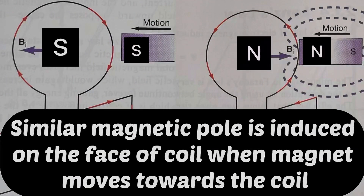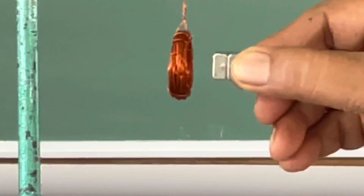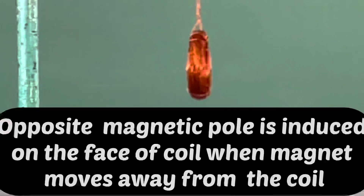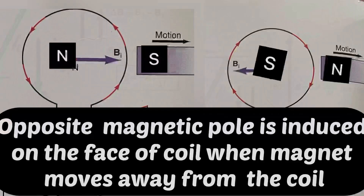A similar magnetic pole is induced on the face of the coil when the magnet moves towards the coil. An opposite magnetic pole is induced on the face of the coil when the magnet moves away from the coil.